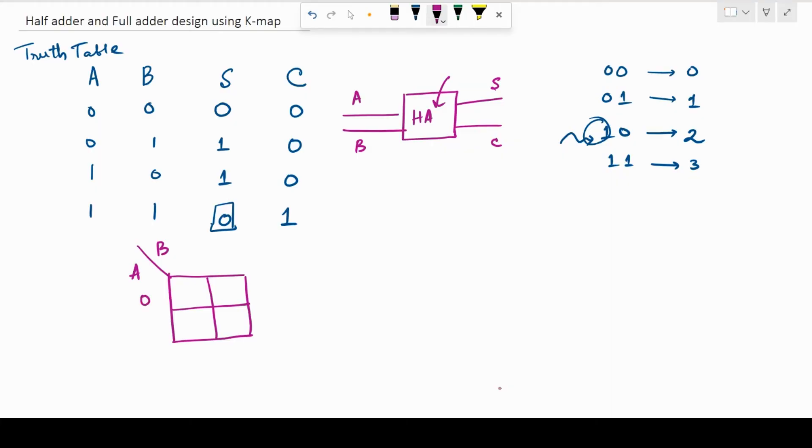A can either be 0 or 1, B can again be 0 or 1. So, put together, the first box is going to represent 0,0 which is nothing but minterm 0. The second box is going to represent 0,1 which is nothing but minterm 1.